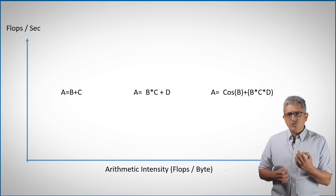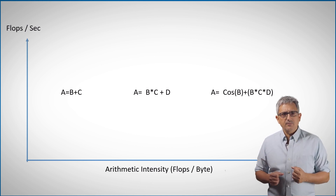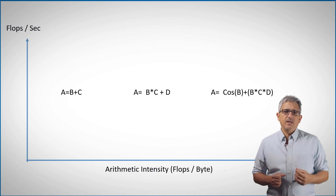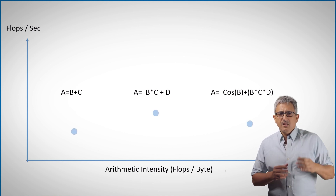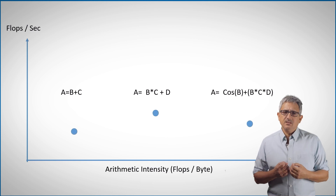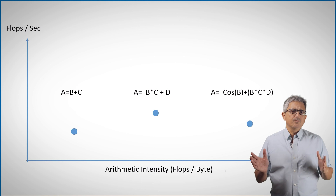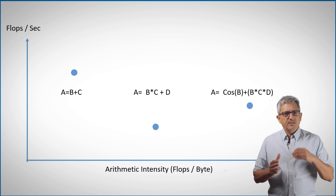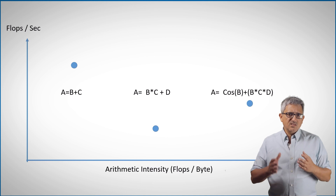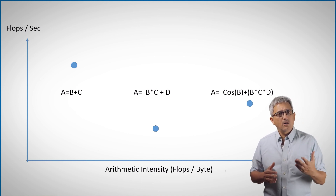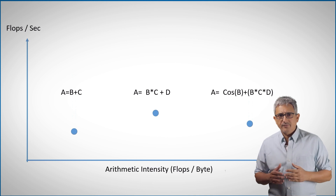Each of these functions has a compute intensity, but how fast can they run? This can be measured by flops per second — the y-axis. The arithmetic intensity is, theoretically at least, fixed, so it cannot move right or left, but a function can run faster or slower depending on the software implementation or the hardware it uses — so it can move up and down on the graph.